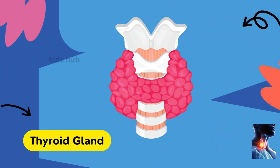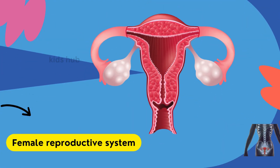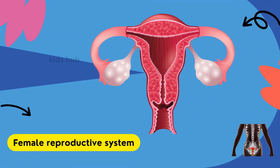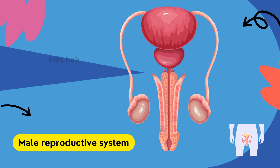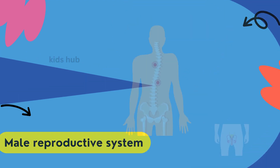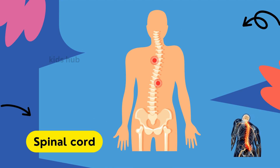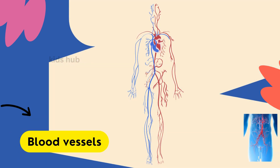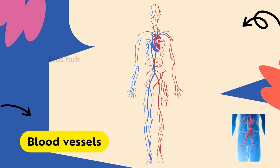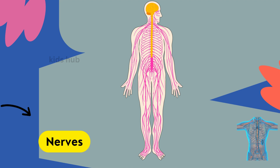Thyroid gland. Female reproductive system. Male reproductive system. Spinal cord. Blood vessels. Nerves.